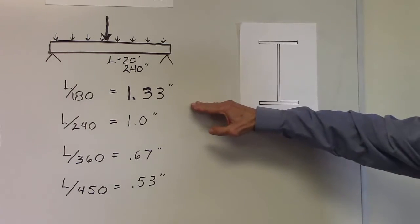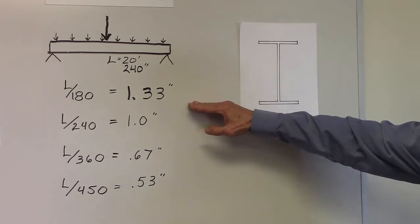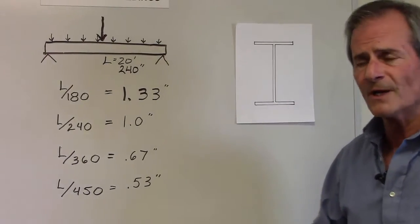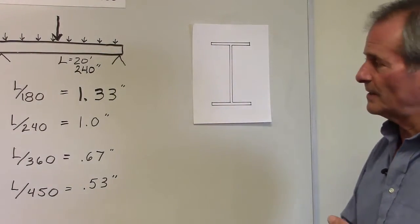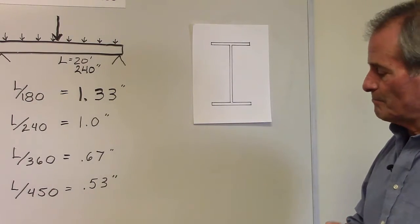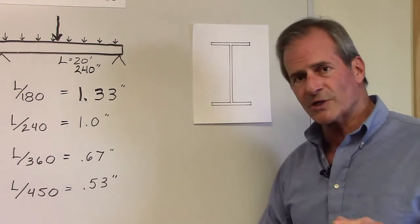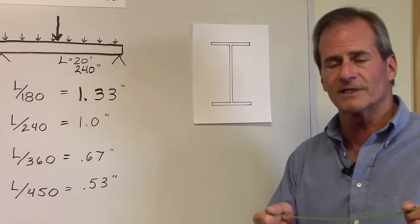So basically, once you knew what your deflection was, you'd plug it into a formula, and you would come out with what was called a moment of inertia. That is the member's actual capability of resisting a deflection.